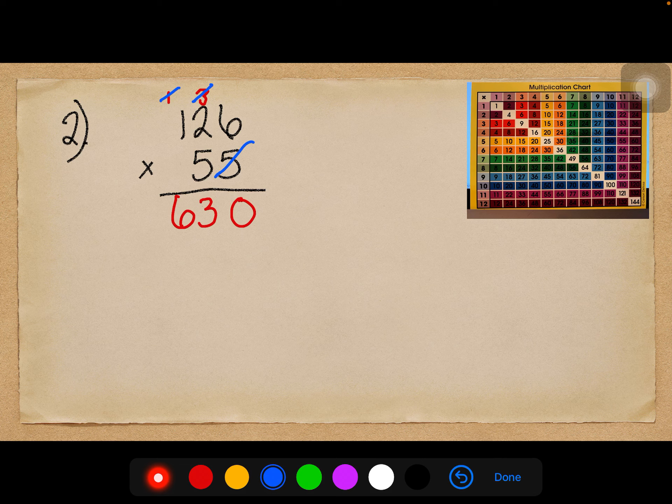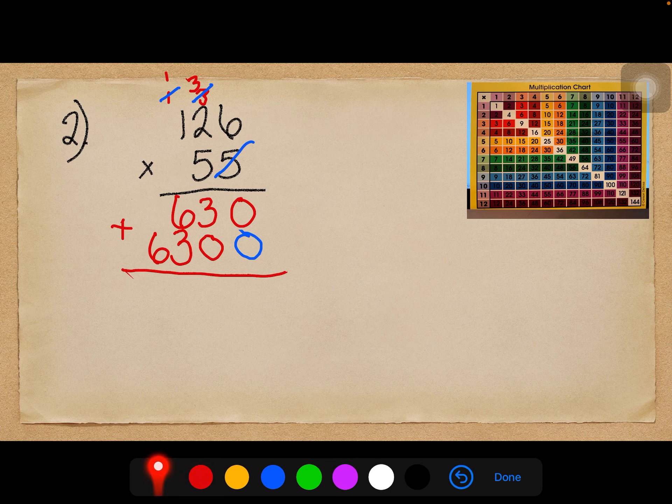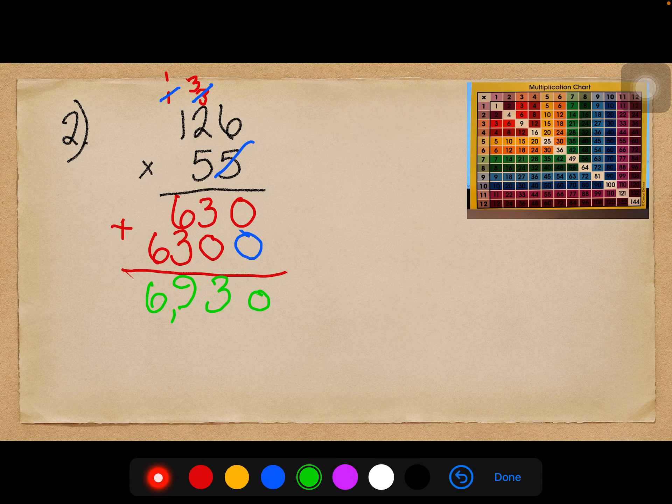Carry the 1. 5 times 1 is 5, plus 1 more is 6. My first partial product is 630. Now I'm done with the 5, and all that goes with it, mark it with a 0. 5 times 6 is 30. Put down the 0, carry the 3. 5 times 2 is 10, plus 3 is 13. Carry the 1. 5 times 1 is 5, plus 1 more is 6. So my second partial product is 6300, which makes sense, because my multipliers are the same digit. So I see a connection between this partial product and this partial product. That makes sense. Okay, so now I have to add my partial products. And I get 6930.